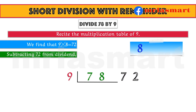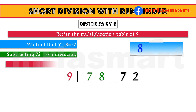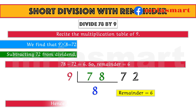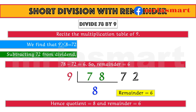Subtracting 72 from the dividend. 78 minus 72 equals 6. So, remainder equals 6. Hence, quotient equals 8 and remainder equals 6.